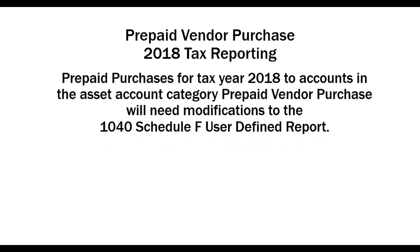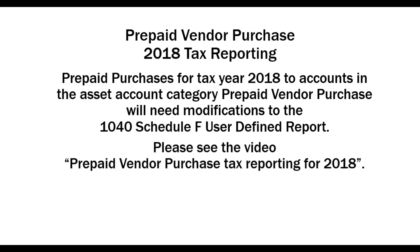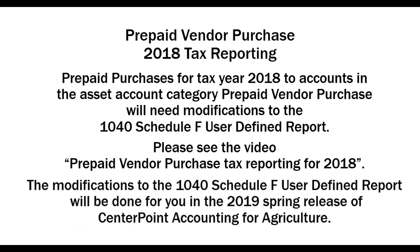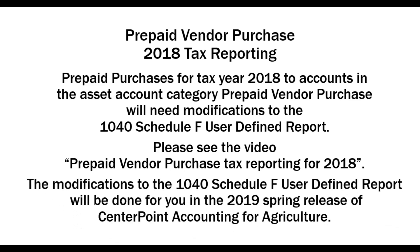There is a modification that can be done on that. So if you are going to be purchasing products for 2019 but in the tax reporting of 2018, you'll want to see the video on prepaid vendor purchase tax reporting for 2018 and it'll step you through that modification. If that doesn't apply, then modifications to the 1040 Schedule F are going to be done for you in the 2019 spring release of CenterPoint Accounting for Agriculture.